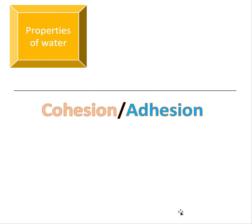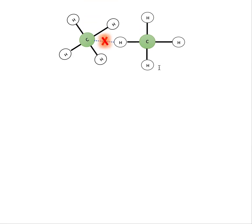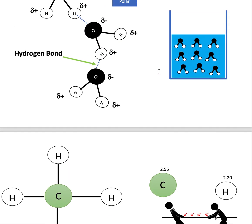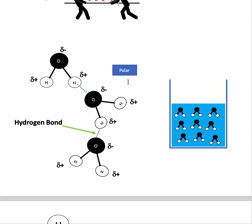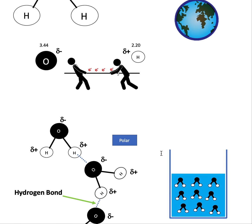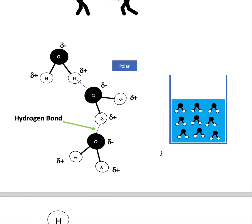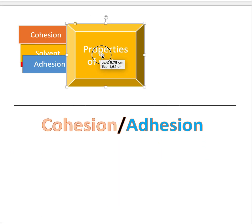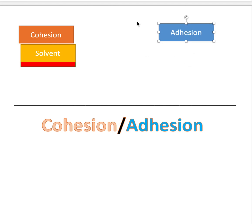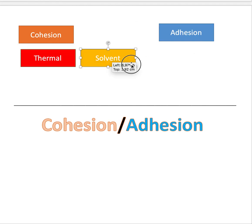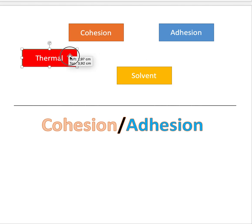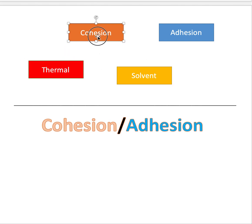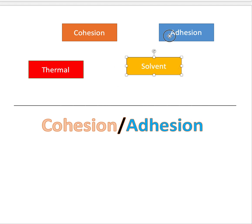In this video I'll be continuing to talk about water. Make sure to check out my previous video which was all about hydrogen bonding, because if you want to understand the properties of water I'm about to talk about, you need to understand hydrogen bonding — that will make everything clear and you won't have to memorize anything. Because of hydrogen bonding, a lot of unique properties arise for water that other substances without hydrogen bonding can't exhibit.